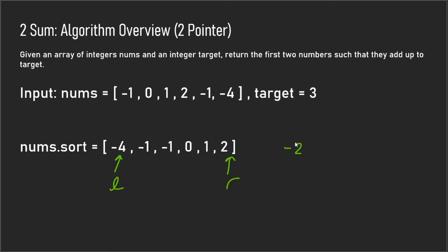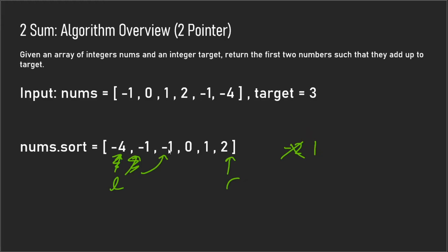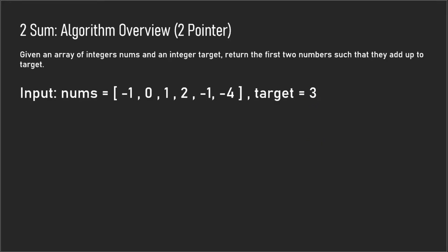We compare negative two to the target and see it needs to go up, so we shift the left pointer in. If the target were lower we'd shift the right pointer in, but since the target is greater we shift left. Now we recalculate: the sum becomes one, then negative one, then zero, then two, and finally left plus right equals three — our target. So one plus two equals three, and those are the two numbers that add up to the target.